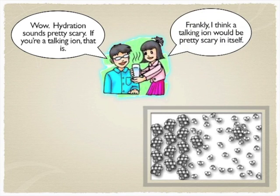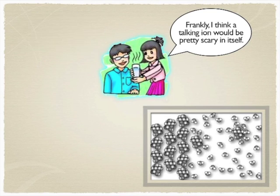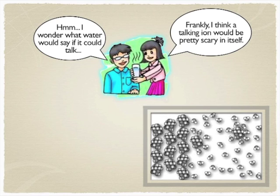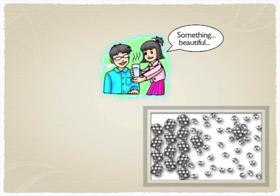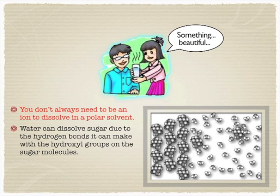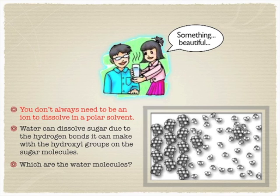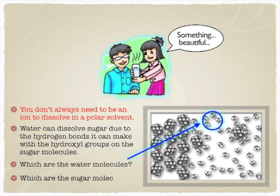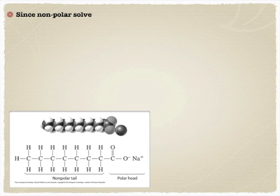The water molecules get in and the positive parts go after the negative ions, and the negative parts go after the positive ions. When those water molecules get in, they can overcome the crystal lattice — if it's a soluble salt. You don't always have to be an ion to dissolve in a polar solvent; you just need an unequal distribution of charge. Water can dissolve sugar not because sugar is ionic, but because sugar has partially positive and partially negative regions, including hydroxyl groups. You can see water molecules hydrating sugar molecules and completely surrounding them.